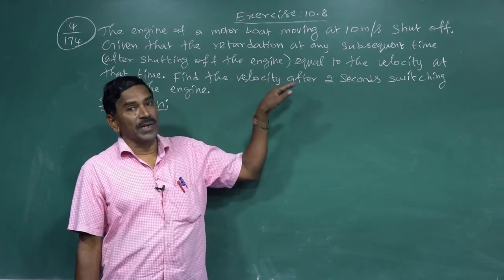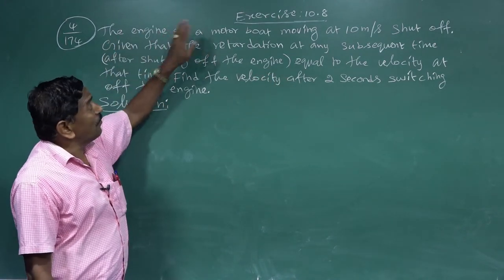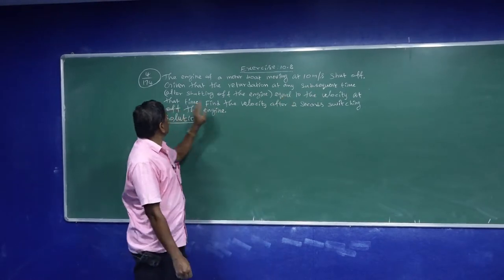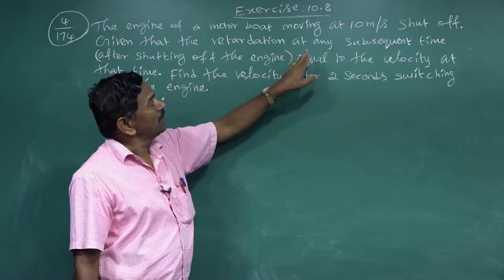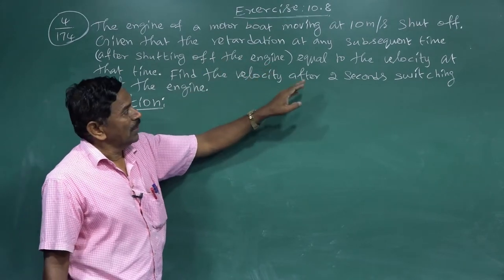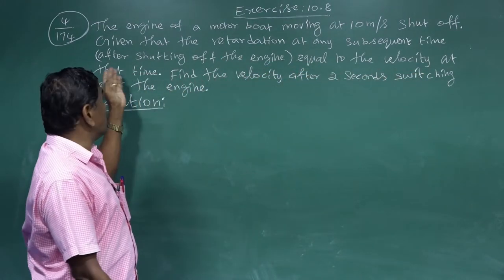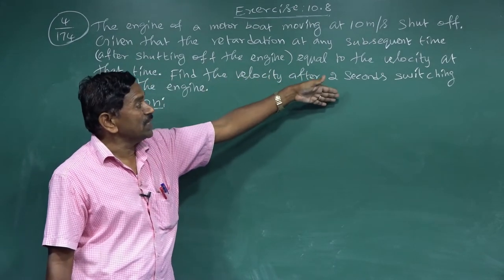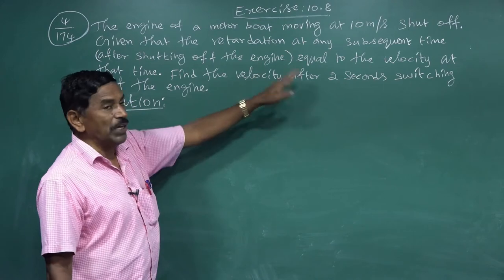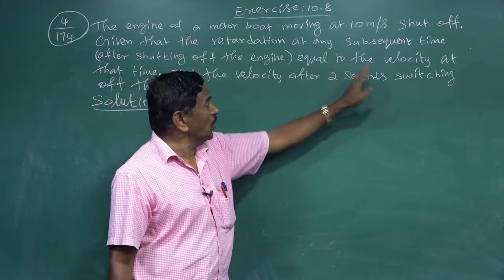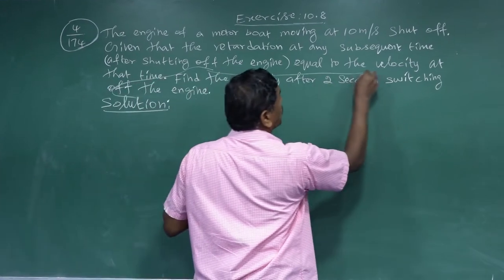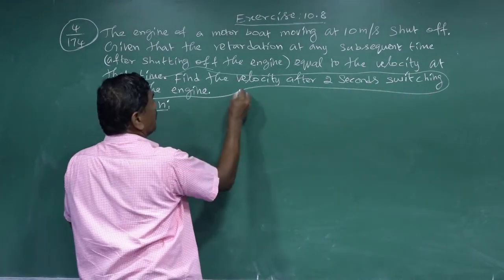Exercise 10.8, problem four: the engine of a motor boat moving at 10 meters per second is shut off. Given that the retardation at any subsequent time after shutting off the engine is equal to the velocity at that time, find the velocity after 2 seconds of switching off the engine.